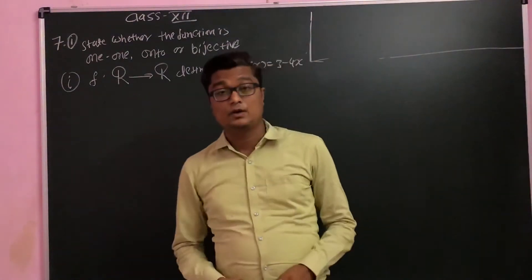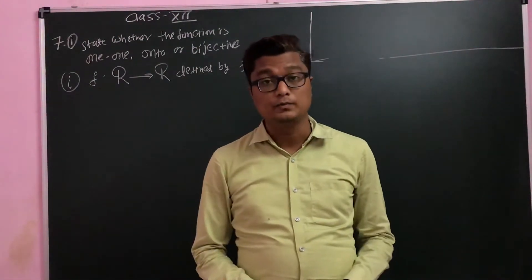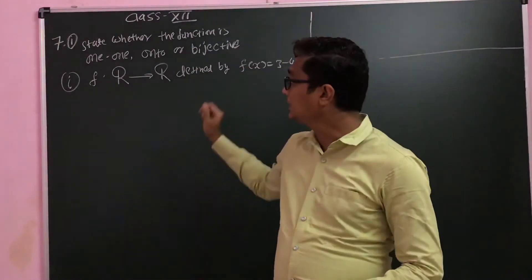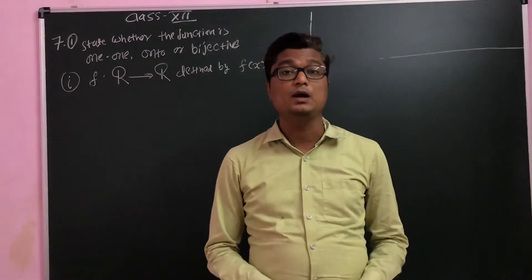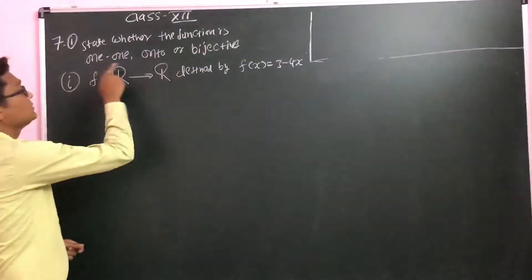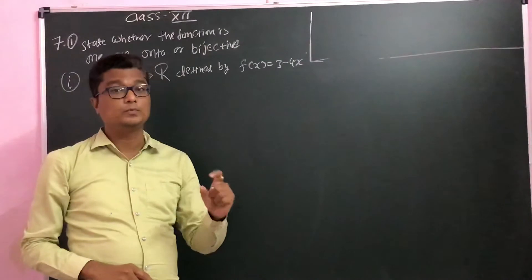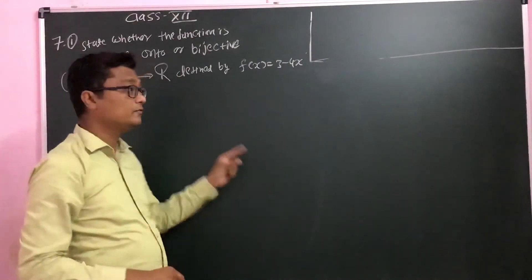Hello everyone, so today we are going to do exercise number 1.2, and in that we are particularly doing problem number 7. We are asked to state whether the functions are one-one, onto, or bijective. There are two problems with some questions given. First one is this.